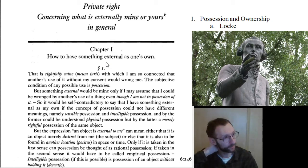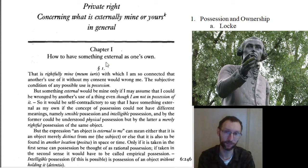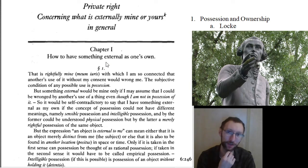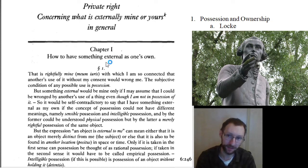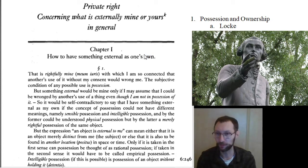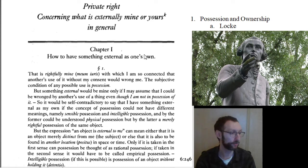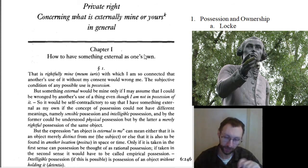Locke says the state of nature is fine — people can go around growing crops and living on their own. But it is kind of inconvenient. When there are property disputes, people will disagree about what belongs to whom, and without an impartial judge, people are going to be biased in their own favor and make mistakes. So it's much easier if we set up a government to manage property disputes and make sure nobody steals from anyone else. What you do is take your property and, along with others who have property, join together and form a state.